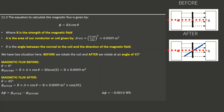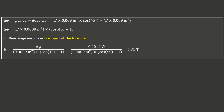Continuing, the change in magnetic flux equals (B × 0.0009 × cos45°) minus (B × 0.0009). We rearrange and make B the subject of the formula, then substitute the value of negative 0.0014 weber calculated in Question 11.2. We find that B equals 5.31 tesla. Tesla (T) is the unit of measurement for magnetic field strength.